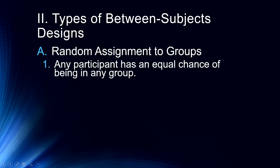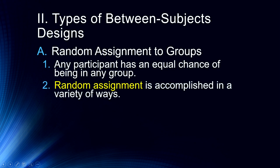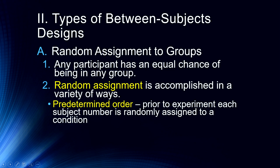So let's start with random assignments to groups. The general rule of thumb for random assignment is each participant has an equal chance of being in any of our conditions or any group in our between groups design. We can accomplish this random assignment in a variety of ways. A very common way to do this is one in which we come up with a predetermined order.